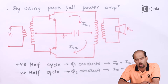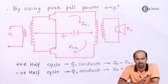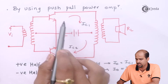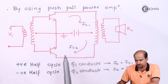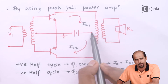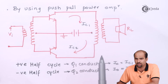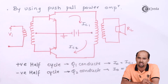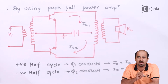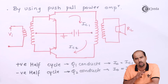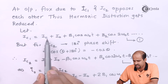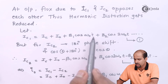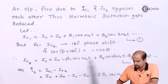In a push-pull power amplifier, during the first half cycle IC1 flows in one direction, and during the second half cycle Q2 conducts and IC2 flows in the opposite direction. Both directions relative to the center tap transformer are different. Writing IC1 using the distortion formula: IC1 = IC + I₀ + B1·cos(ω₀t) + B2·cos(2ω₀t) and so on.